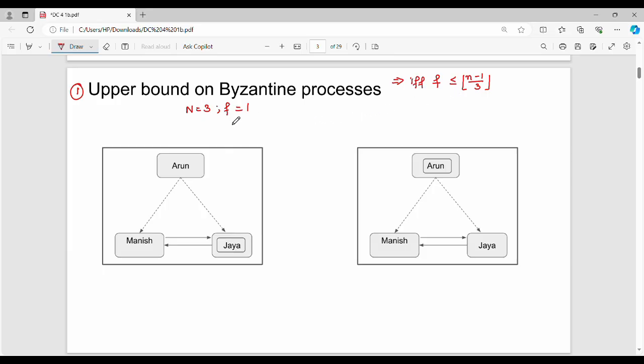Let's look at a simple example where n equals 3 and the number of failures f equals 1. So n equals 3, f equals 1. In the condition, we need to verify: is 1 less than or equal to floor of 2 by 3? So 2 by 3 floor value equals 0. So 1 less than or equal to 0 is false.